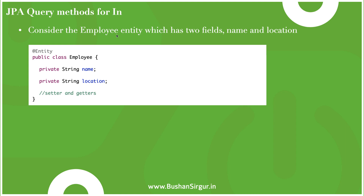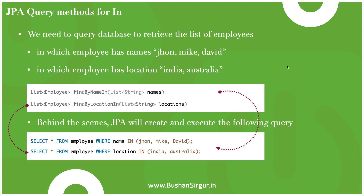Consider the employee entity which has two fields: name and location. We need to query the database to retrieve the list of employees where the employee name is John, Mike, or David, or retrieve employees with location India or Australia. Instead of writing the SQL query, we can write a query method to achieve this requirement.